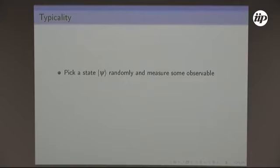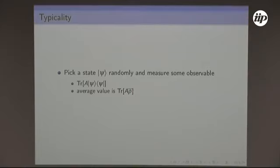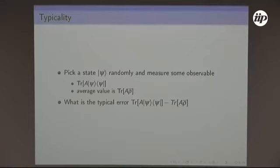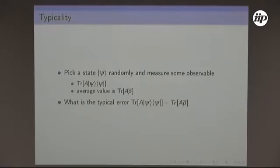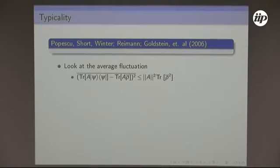Let's imagine the system is in a given well-defined pure state and I want to measure some observable — say, the temperature. What I usually do is use the average state to define the value of that observable. This is actually equivalent to sampling many states at random and taking the average. So what if I don't use the average — just some given state — what error am I committing?